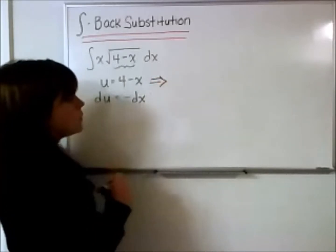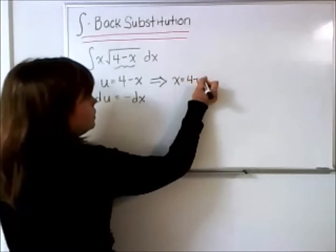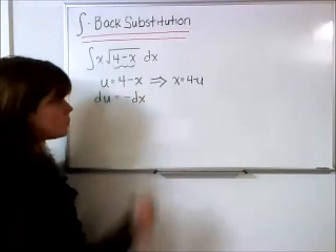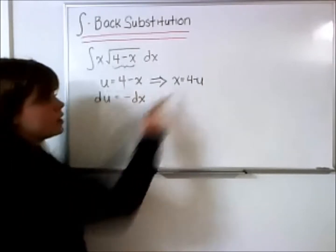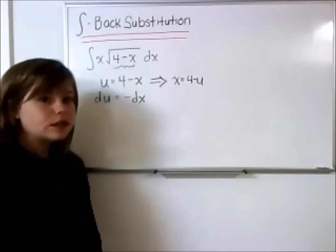So from this expression, we can actually write that x is equal to 4 minus u. And again, all I did was rearrange my variables here to get the explicit quantity that we're substituting for x.